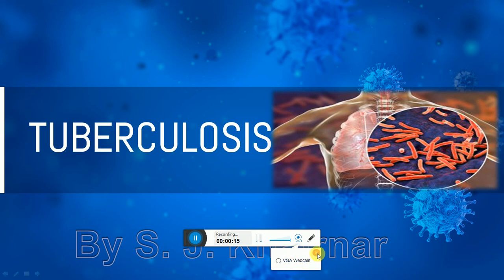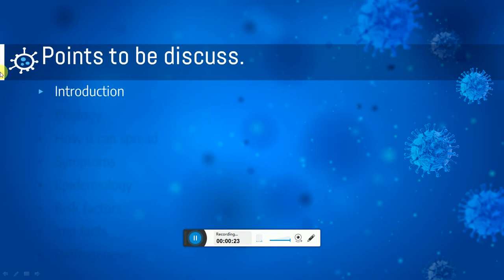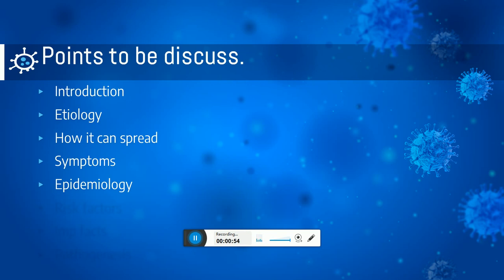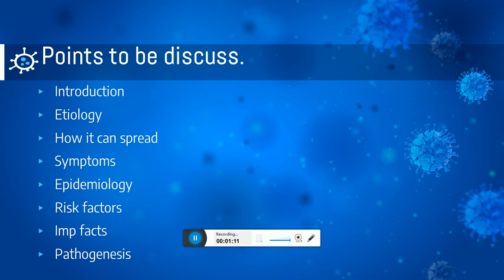Today I am going to discuss tuberculosis, which is part of our syllabus. First, we will cover the introduction of tuberculosis — what it means and the actual condition — then etiology, the reason for the disease, then how it can spread and symptoms of that disease, then epidemiology, risk factors, important facts which all healthcare professionals and normal people should know, and pathogenesis — the events and development of that disease. So let's get right into it.